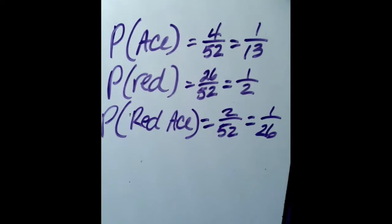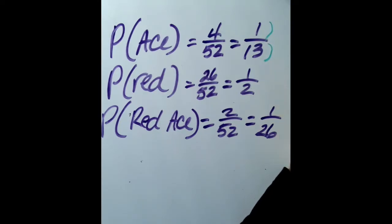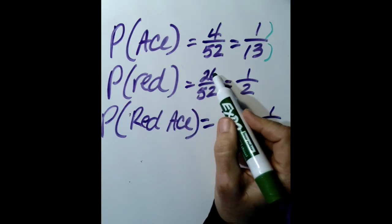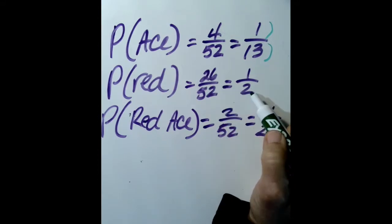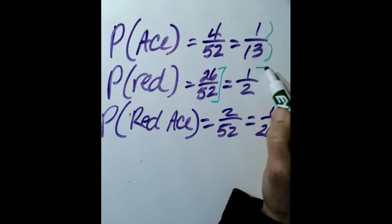The probability of drawing an ace: there are four aces in a deck of 52 cards, so that simplifies to one out of 13. This makes sense because out of every 13 cards that make up a suit, one of them will be an ace. The probability of drawing a red card is 26 out of 52, or one half — half the deck is red and half is black.